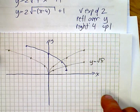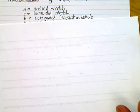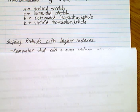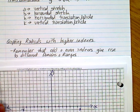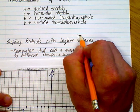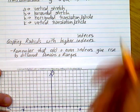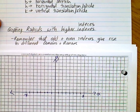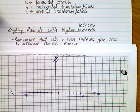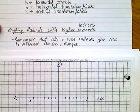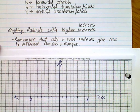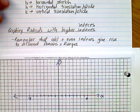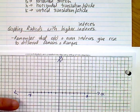Now, we're going to get into cube roots and higher indices. Higher-order indices give rise to different domains and ranges — specifically the difference between an odd and an even index. Let's have a look at a couple of these.